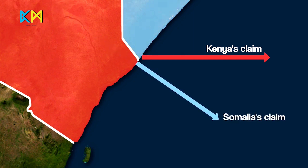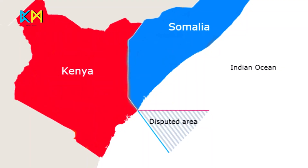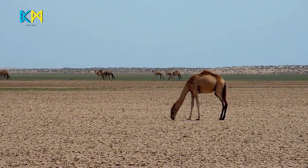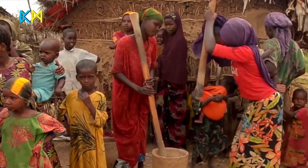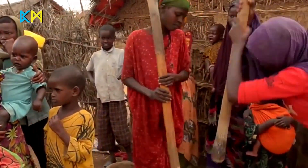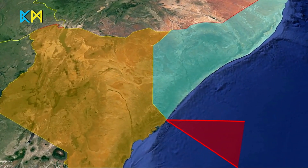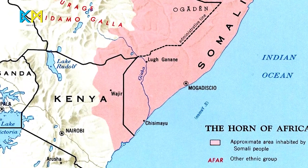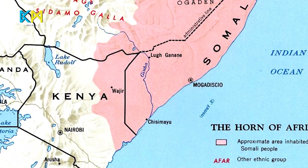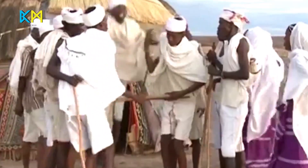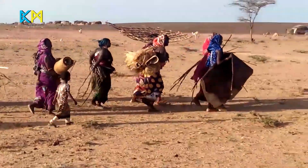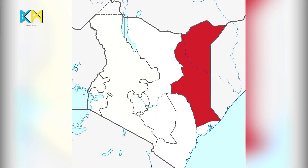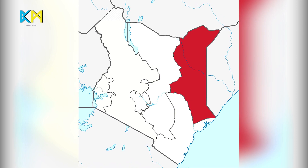Kenya and Somalia are both former British colonies and, like many other colonies, they both had their borders drawn by their former masters. Before the coming of the Europeans, the border between them was largely undefined and people lived according to tribal lines. This border, which was part of a British and Italian agreement, has been a source of disputes and tensions ever since. The border intersects an ethnically Somali area from which a multitude of problems stem. The current northeastern part of Kenya has an ethnic Somali majority and was formerly known as the Northern Frontier District.